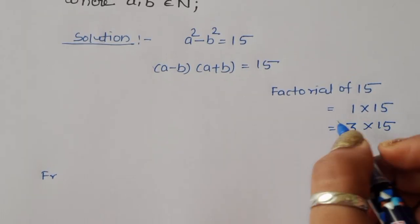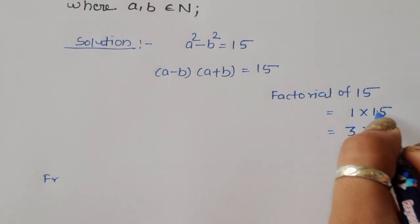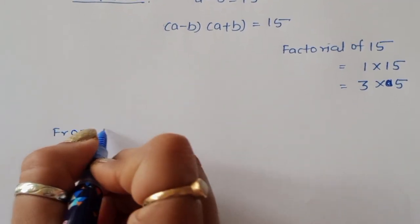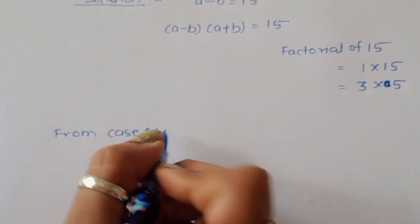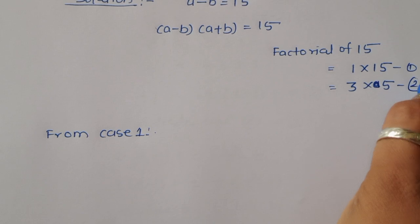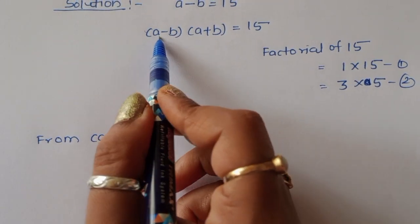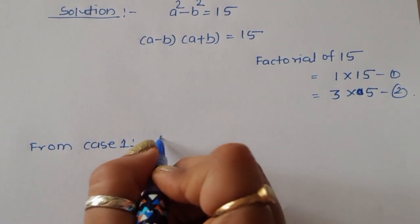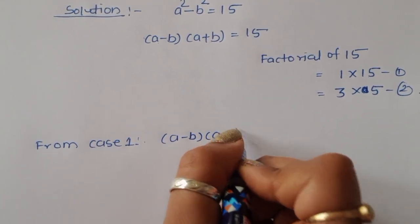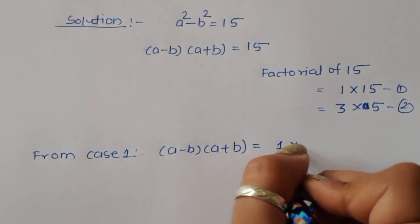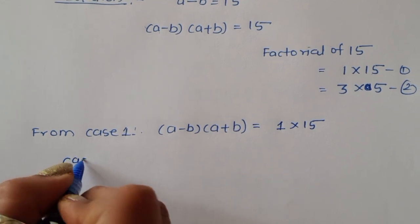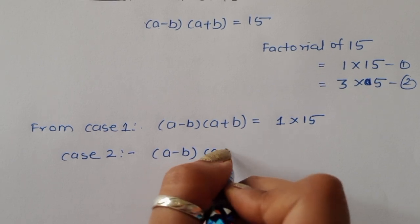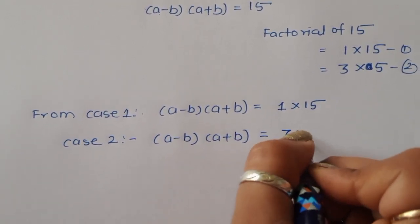From case 1 and case 2: Case 1 is A minus B times A plus B is equal to 1 times 15. Case 2 is A minus B times A plus B is equal to 3 times 5.